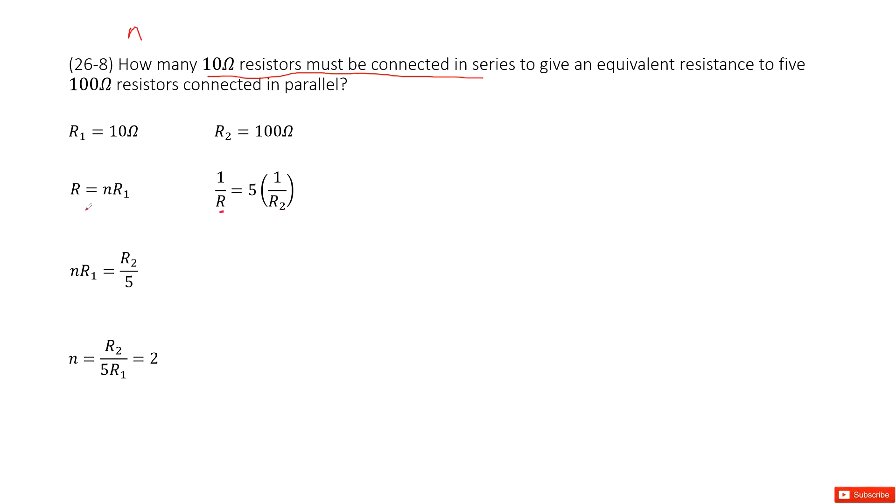And then we can see this R equal to this R. Agree? So we just solve these two equations, get the function look like this one. N times R1 equal to R2 over 5, right? So number N equal to R2 over 5 times R1.